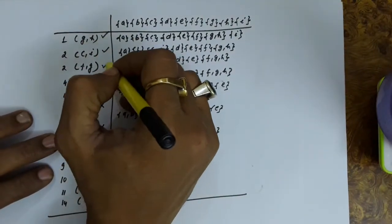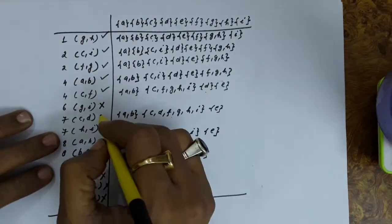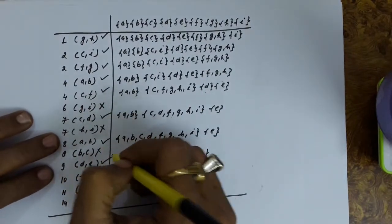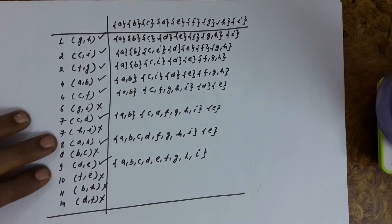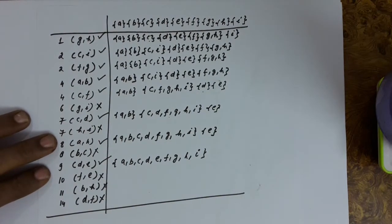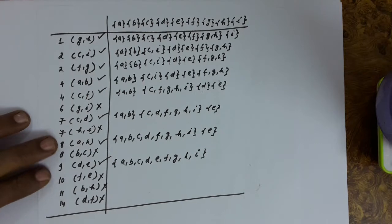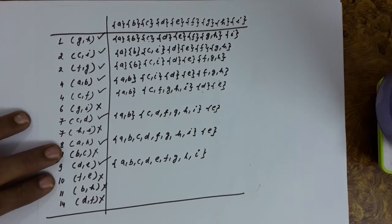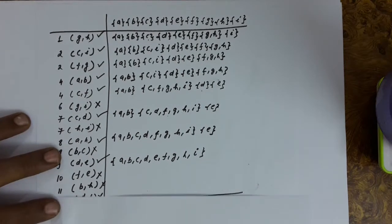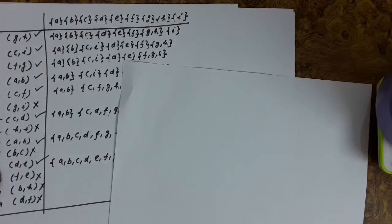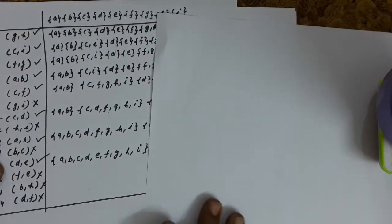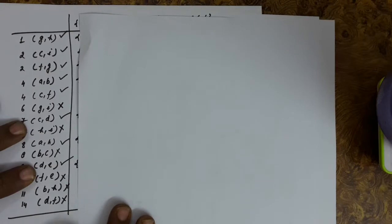We apply tick marks to selected edges and cross marks to rejected edges. Tick marks mean the edge has been selected for the minimal spanning tree, while cross marks mean the edge has been rejected and will not be included.